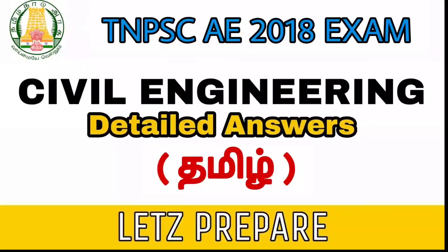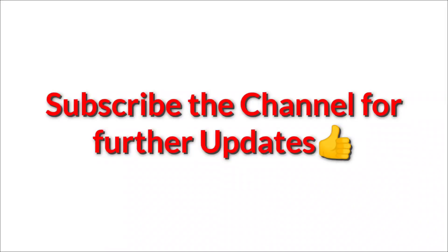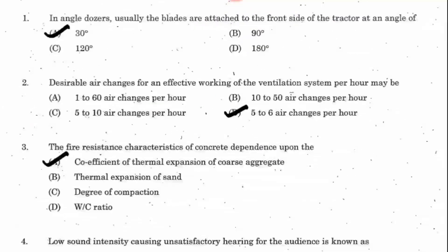TNPSC AE 2018 exam civil engineering question paper. Question number 1: In angle dozers, the blades are usually attached to the front side of the tractor at an angle. The tractor's left front lower blade is 30 degrees inclined downwards — that's how we fix it and excavate soil more easily. So the answer is 30 degrees.